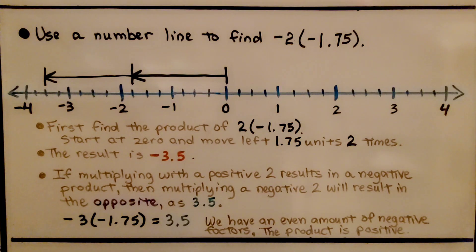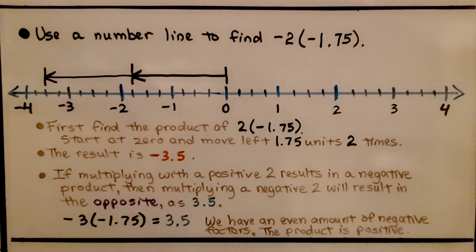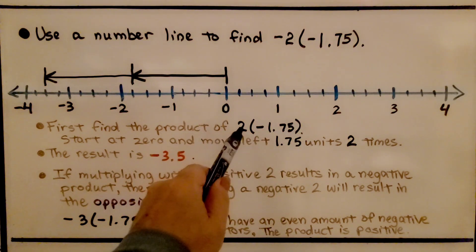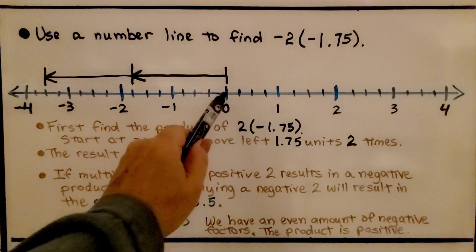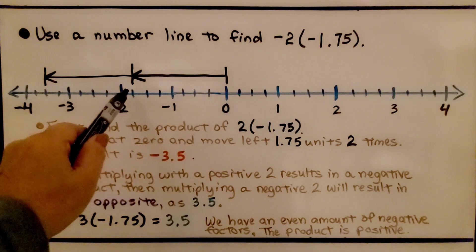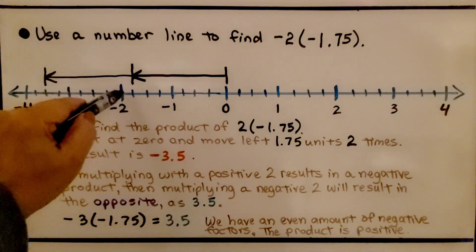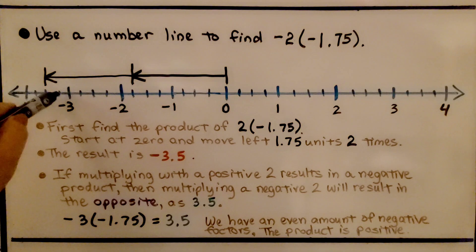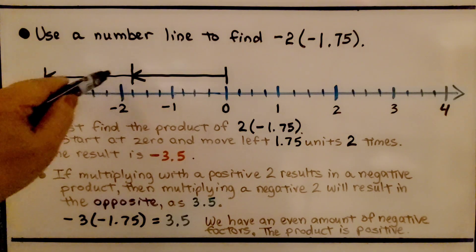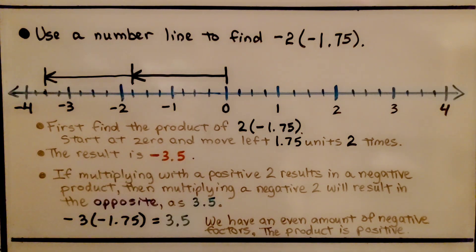Let's try another one. Use a number line to find negative 2 times negative 1 and 75 hundredths. We first find the product of positive 2 times negative 1 and 75 hundredths. We start at 0 and move left — 1.75 is 1 and 3 fourths. There's our first arrow. We do it a second time, landing in between negative 3 and negative 4 at negative 3 and 5 tenths.